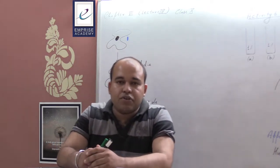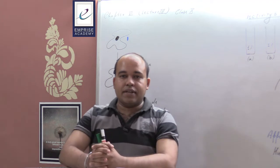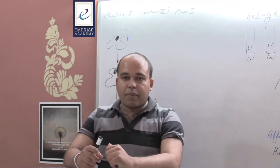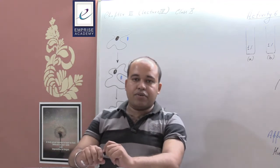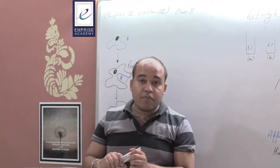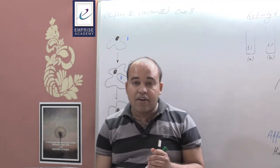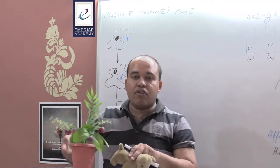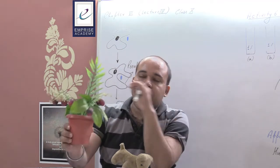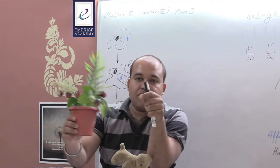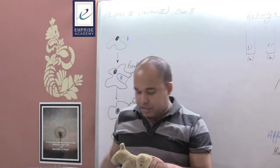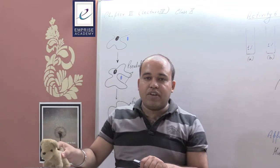Hello and welcome back, students, to another video tutorial — the third lecture of Class 10th. In the second lecture, we already talked about the autotrophic mode of nutrition. We saw how plant species convert atmospheric light into chemical energy that is stored and utilized by different living organisms. Now we will be talking about the heterotrophic mode of nutrition.